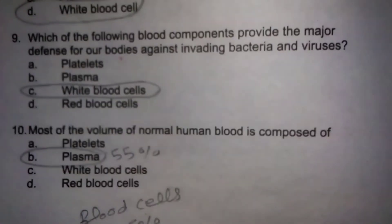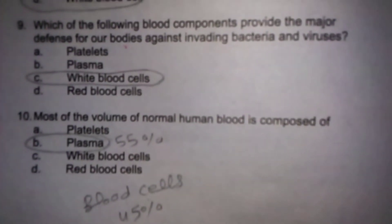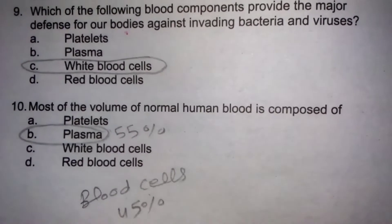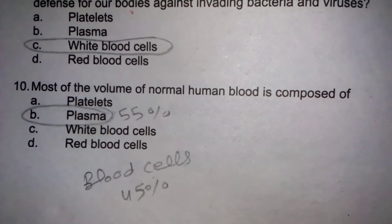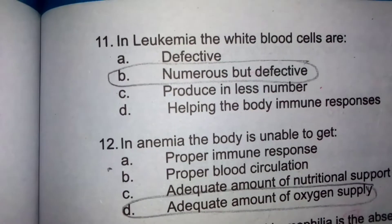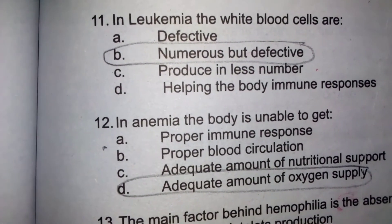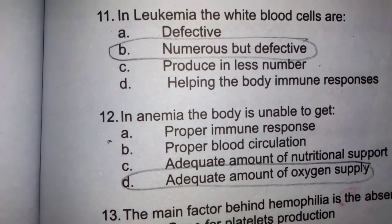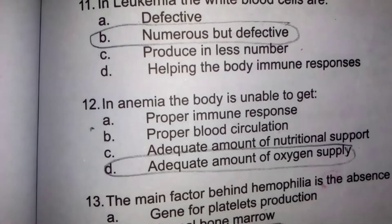Most of the volume of normal human blood is composed of plasma — 55 percent plasma ہوتا ہے اور blood cells 45 percent۔ In leukemia, white blood cells are numerous but defective — white blood cells زیادہ ہوتے ہیں لیکن کوئی کام نہیں کرتے۔